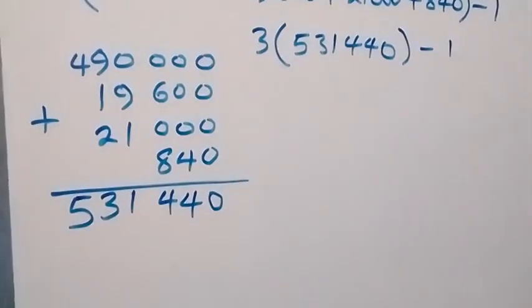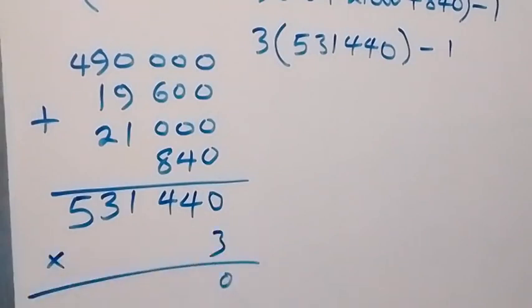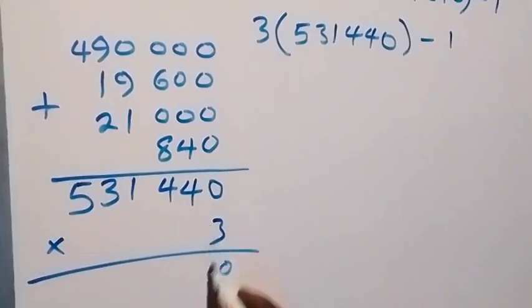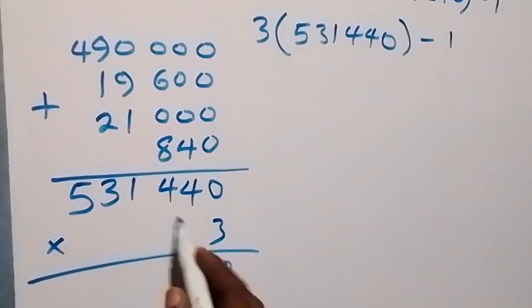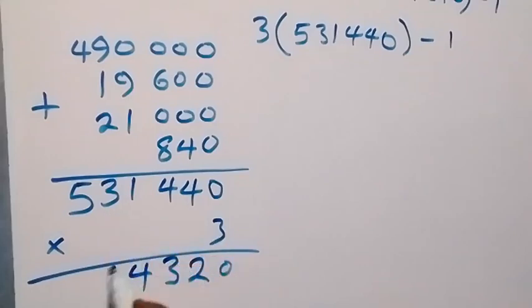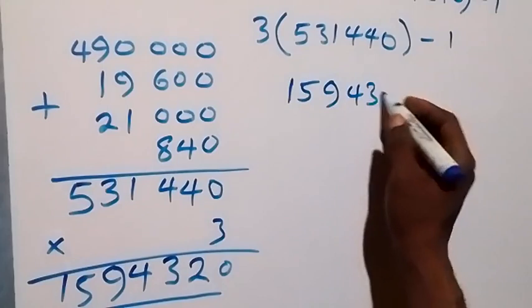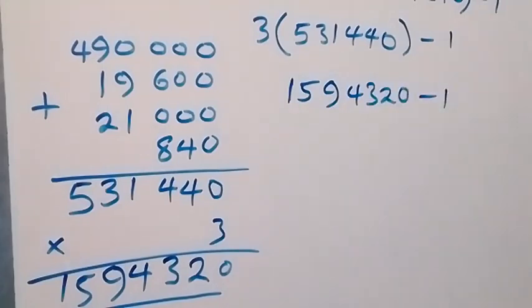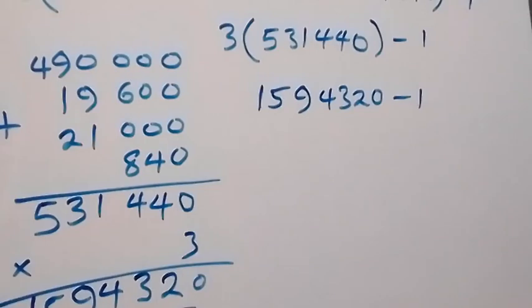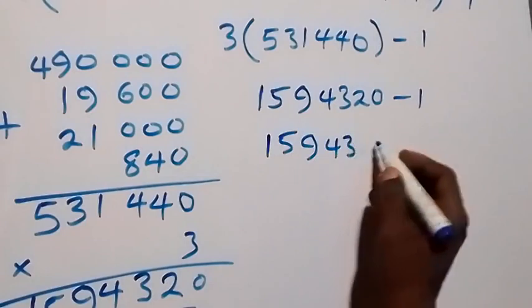From here, 1,594,320 minus 1 gives us 1,594,319.